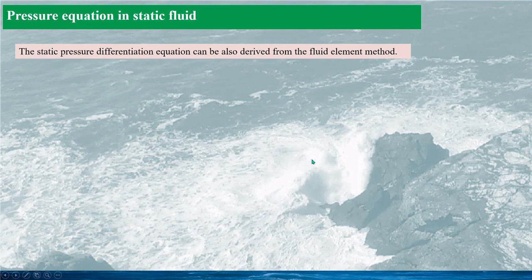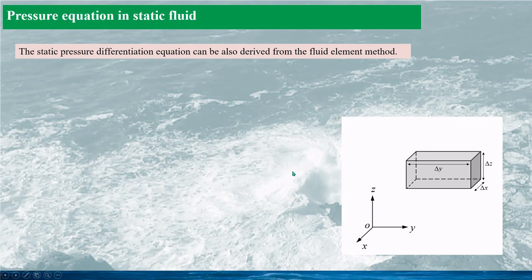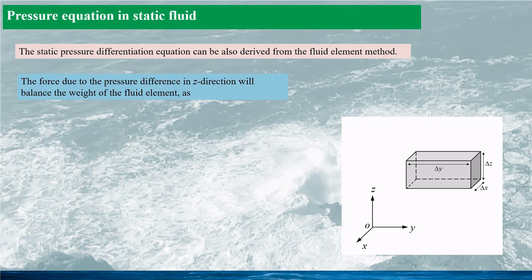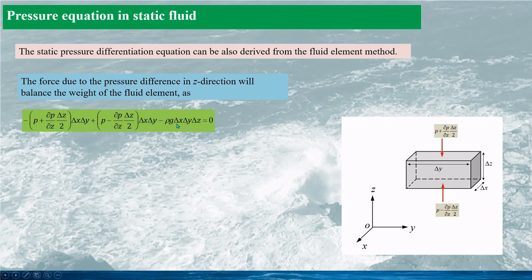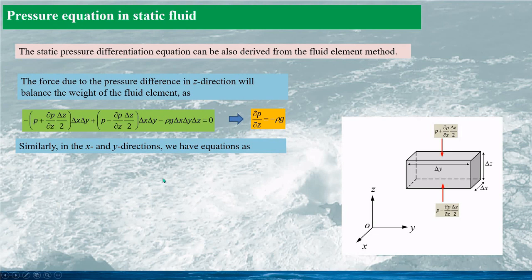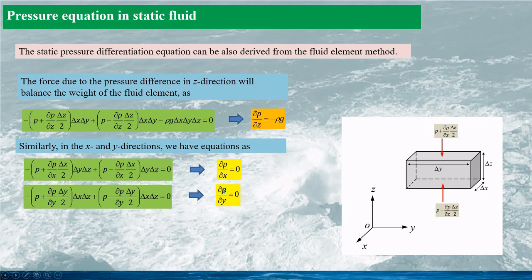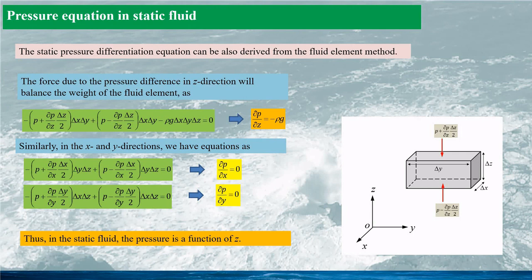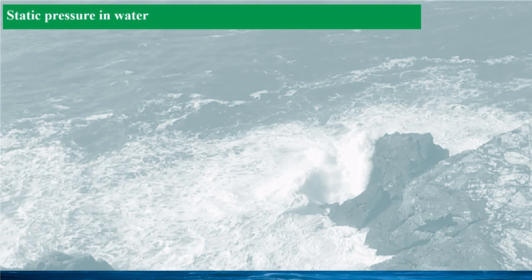The static pressure differentiation equation can also be derived from the fluid element method. For a fluid element, the force due to the pressure difference in the z direction will balance the weight of the fluid element — that is, the force from the pressure balances the weight of the element. Similarly, in the x and y directions, we have corresponding equations. Again, in static fluids, pressure is a function of z and independent of x and y. All these equations are the same as those from the Navier-Stokes equation.